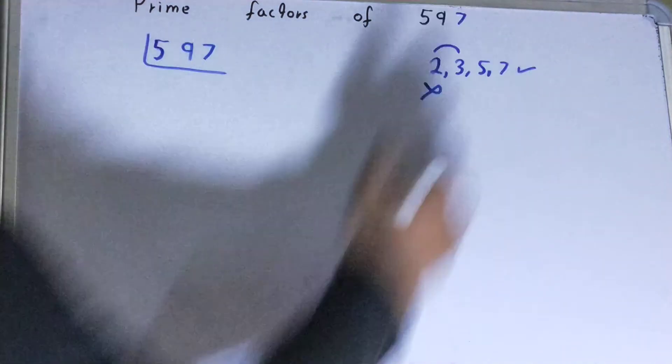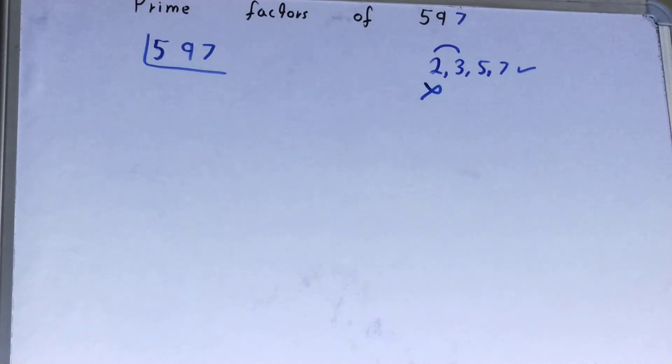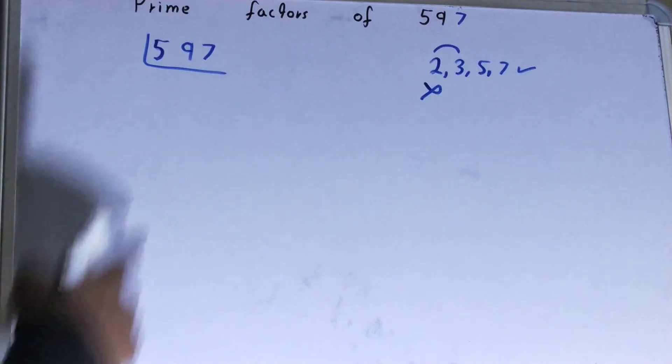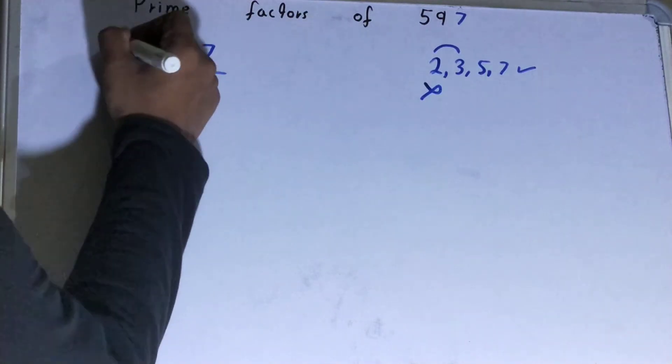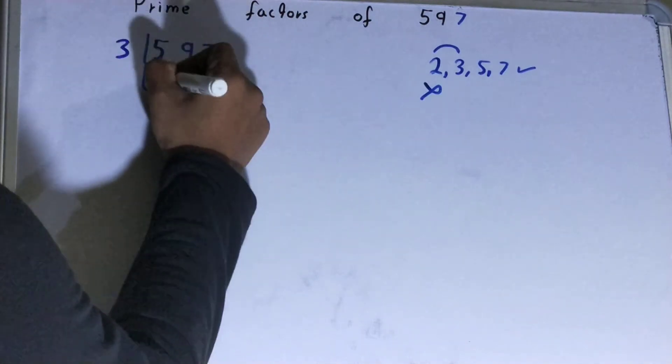So what we'll do, we'll go to the next lowest prime number, that is three. Right, now is the number 597 divisible by three? Let's see. 3 times 1 is 3, 3 times 9 is 27... yes, it is divisible.